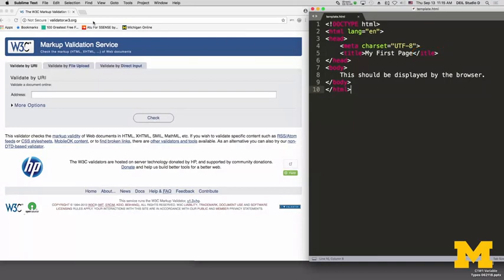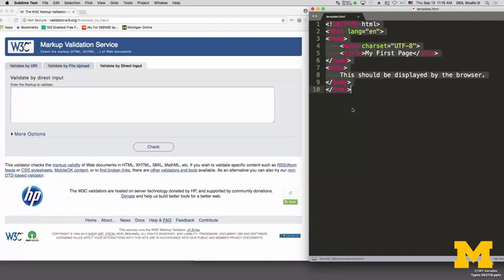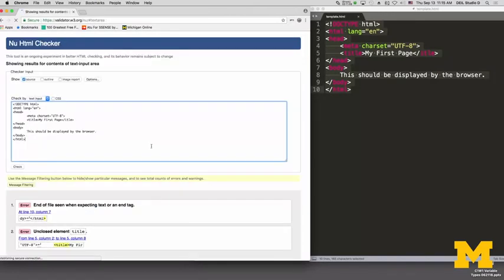What I'm going to do is I went to validator.w3.org and I'm now going to select the third option, validate by direct input. I go back to my file, Command-A or Control-A if you're on a PC, Command-C. I copied all the code and now I want to put it in the validator. Hit check.